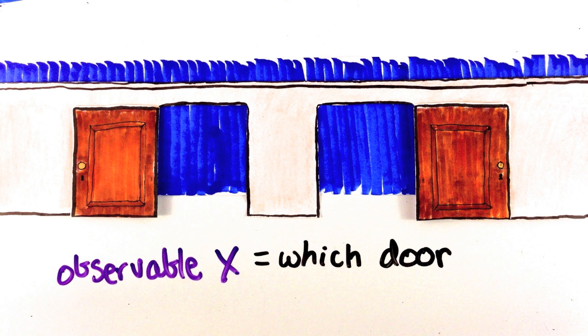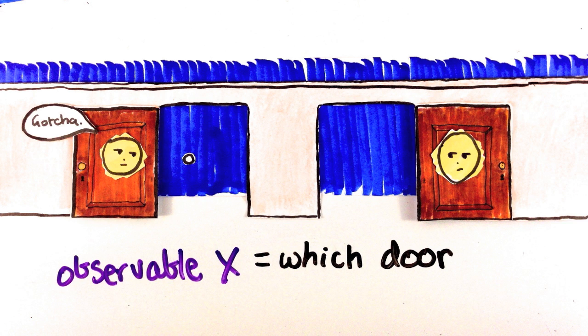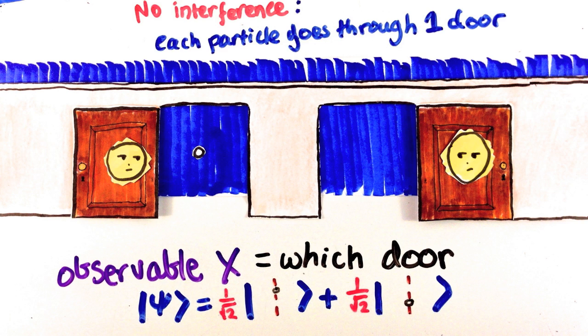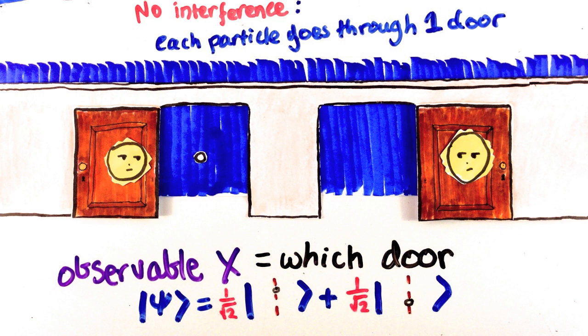You may be thinking that that's not an observable, but it is, because remember you can measure it by putting detectors at the doors. A particle is in a superposition of all possible x values it could have. In this case, it's a superposition of going through door 1 and 2. If I measure which door, there is no interference. It just looks like the particle really was just going through one door.